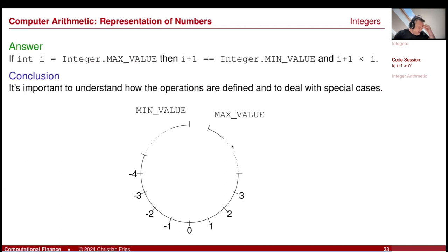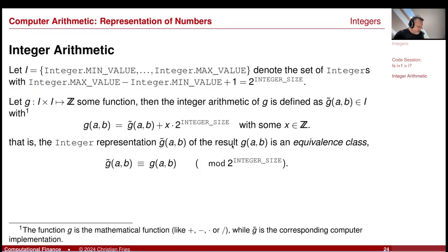And the answer is that we jump to min value. And what's happening, you can easily depict it here. If you add 1, you jump to the min value, you are going around in circles. Also, if you add a larger number, you are going around on this circle. So put differently, you can say that my integer arithmetic is an arithmetic operation on an equivalence class. So because now you have to distinguish two things. There is the mathematical function G, for example, plus, minus, whatever, which you would like to apply to your two integers.